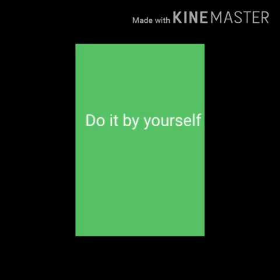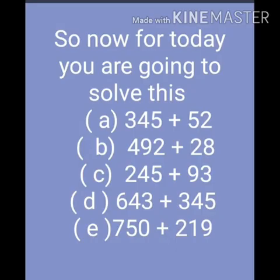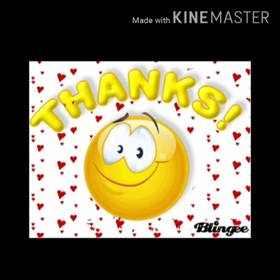Now for today, children, you will solve these sums. First is 345 plus 52, second is 492 plus 28, third is 245 plus 93, fourth is 643 plus 345, and fifth is 750 plus 219. Hope you all enjoyed. Thank you.